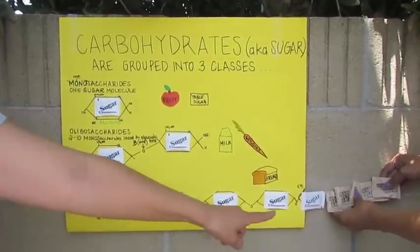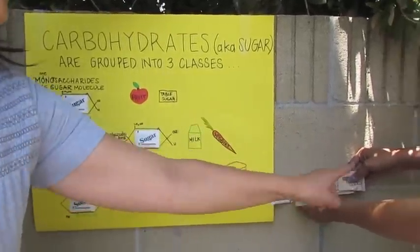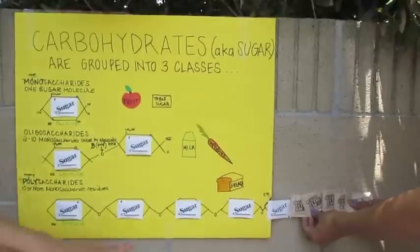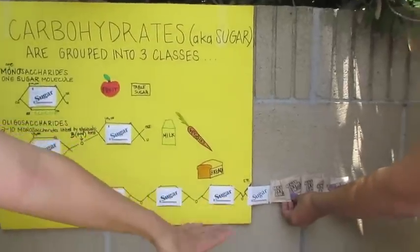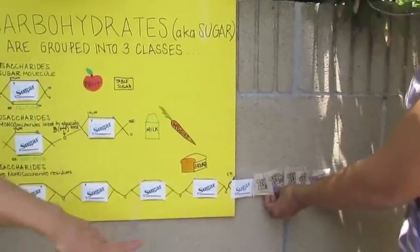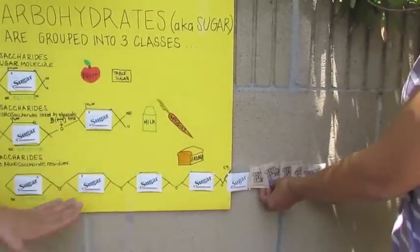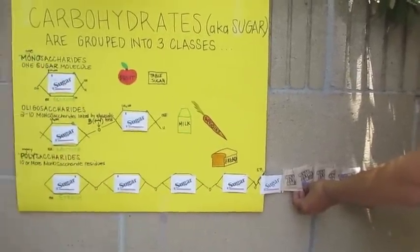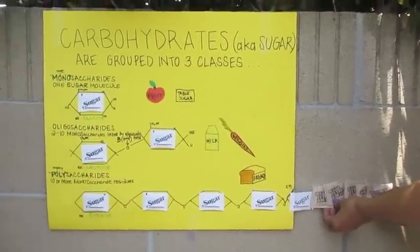Polysaccharides such as these provide sustained energy because they need to be broken down into monosaccharides.